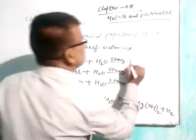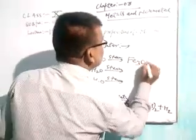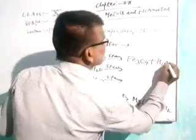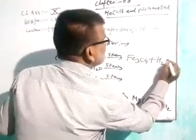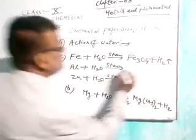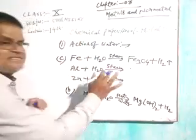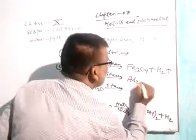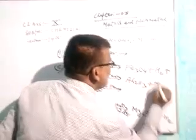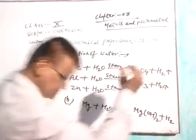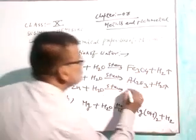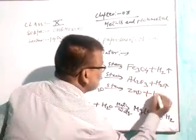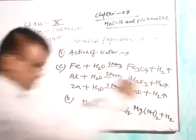Iron reacts with steam to give Fe3O4 plus hydrogen gas. Aluminum reacts with steam to give aluminum oxide and releases hydrogen gas. Zinc also reacts with steam to give zinc oxide and releases hydrogen gas.